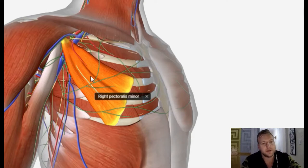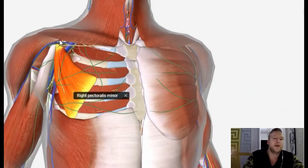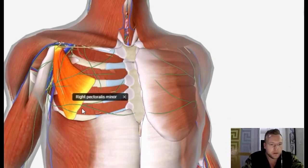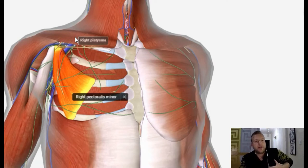So here we can see the pec minor and this is also a huge problem with people with TOS. You can see that it goes right from the top all the way down onto your ribs and you can almost see how that can affect the tightness in your chest and pull on your ribs.